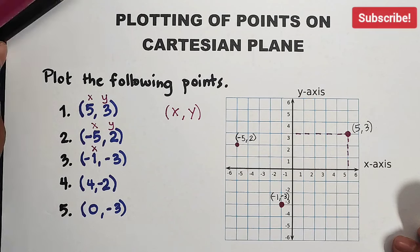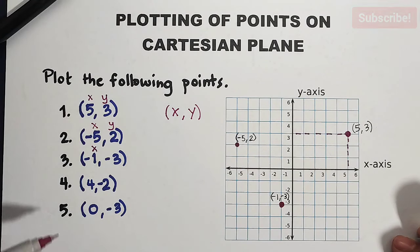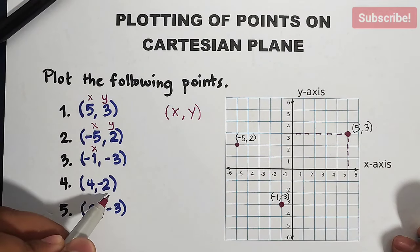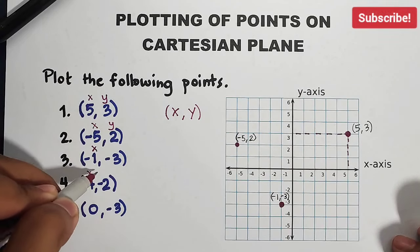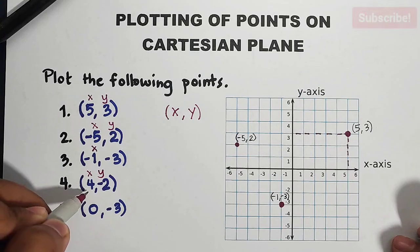Next, number 4. For number 4, we have this: 4 and negative 2. So here, x is positive, your y is negative. This is definitely in quadrant number 4. Okay?